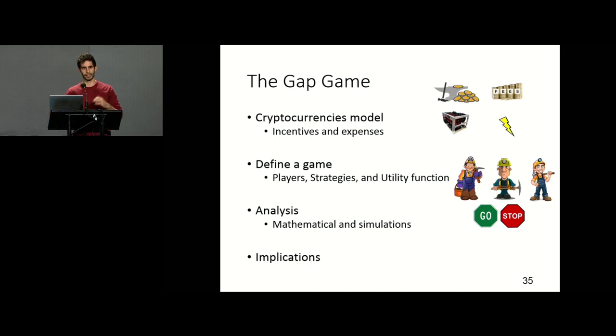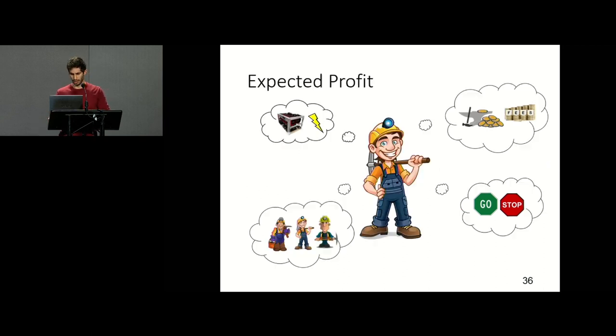So what we do in the gap game is basically model cryptocurrencies and analyze the incentives and expenses of miners. We do that by defining a game. So this is like a game theory thing. Where the players are the miners. The strategies are when to mine or when to start and stop mining. And the utility function is the expected profit. We use a mathematical analysis and simulations and talk about the implications of our results. The expected profit of a miner is composed of all these elements I described since the beginning of the talk. The expenses about mining hardware and electricity. Then the incentives he is about to get. His choice of strategy. When to mine. When to not. And the behavior of other players because that affects the difficulty, which in turn affects his chances of finding blocks.